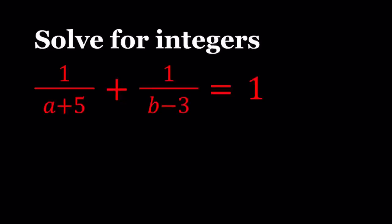Hello everyone. In this video, we're going to be solving a Diophantine equation. We're going to be solving for integers this equation: 1 over a plus 5 plus 1 over b minus 3 equals 1. So a and b are integers and we're going to be finding all the solutions.